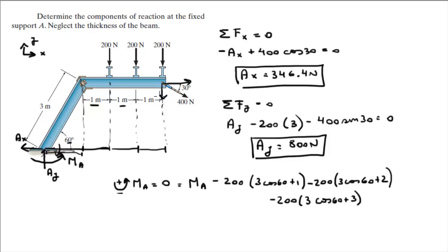And last but not least we have, actually we have two more moments that we have to write down. We have the 400 which is trying to turn the same lever arm right here, which is this component right here. So it's minus 400 sine of 30, because we only want the Y component, times plus, times this, the same distance 3 cosine of 60 plus 3.